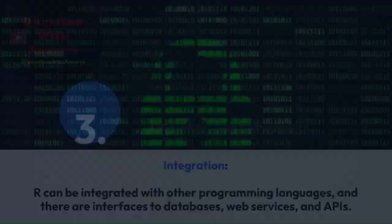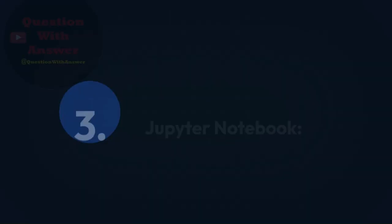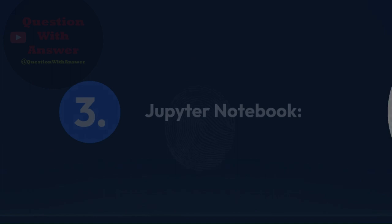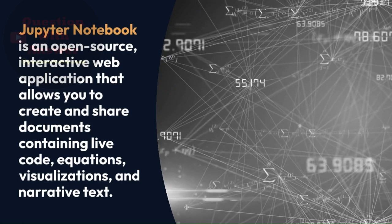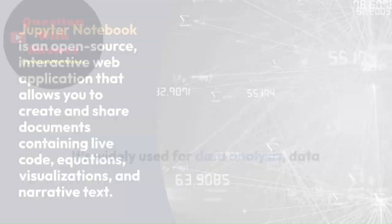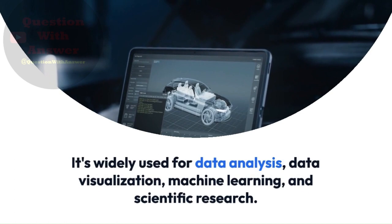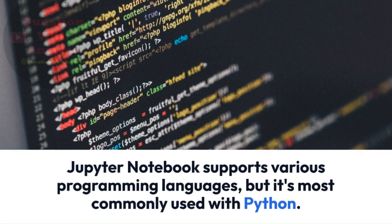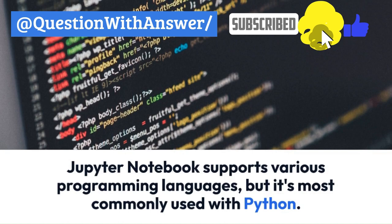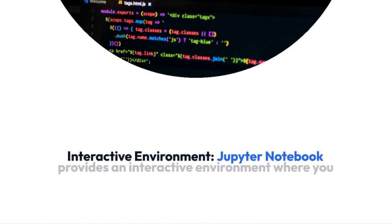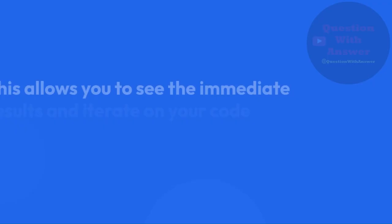3. Jupyter Notebook. Jupyter Notebook is an open-source, interactive web application that allows you to create and share documents containing live code, equations, visualizations, and narrative text. It's widely used for data analysis, data visualization, machine learning, and scientific research. Jupyter Notebook supports various programming languages, but it's most commonly used with Python. Interactive Environment: Jupyter Notebook provides an interactive environment where you can write and execute code in small, manageable cells, allowing you to see immediate results and iterate on your code easily.